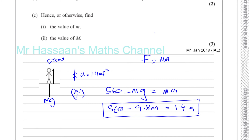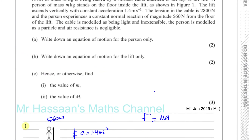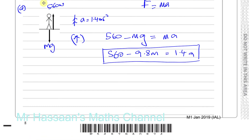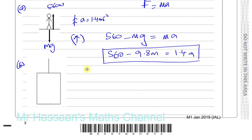Now part B says: write down an equation of motion for the lift only - not for the whole system. This is where many people are going to slip up. What people generally tend to do is find the equation of motion for the whole system, where they take the tension and the weight of both the person and the lift. But it's asking for the lift only, not the man and the lift together. You take just the weight of the lift and the tension in the cable.